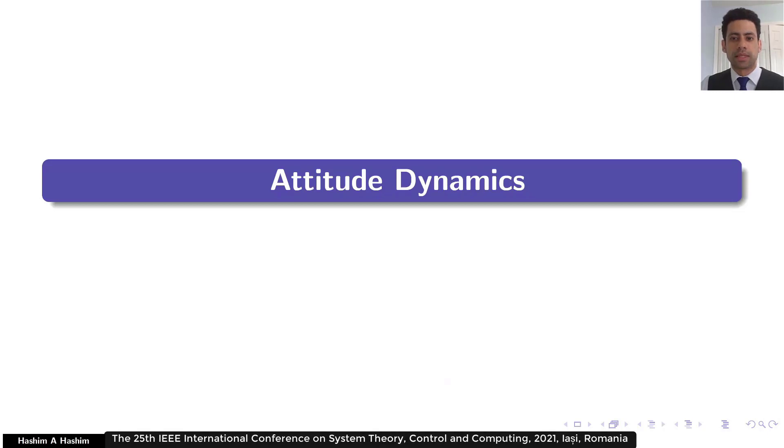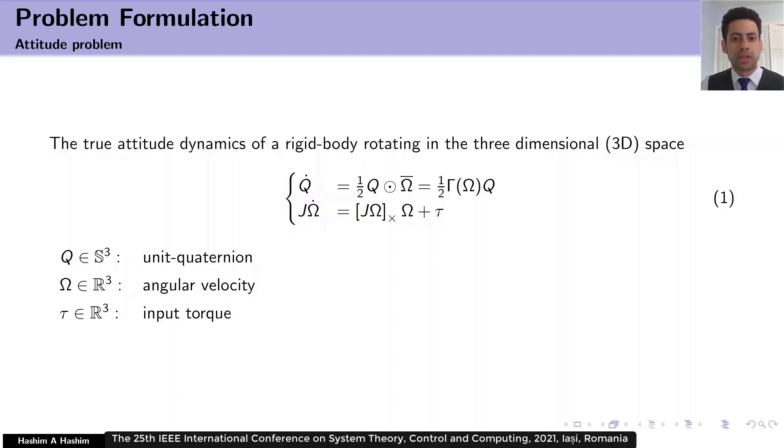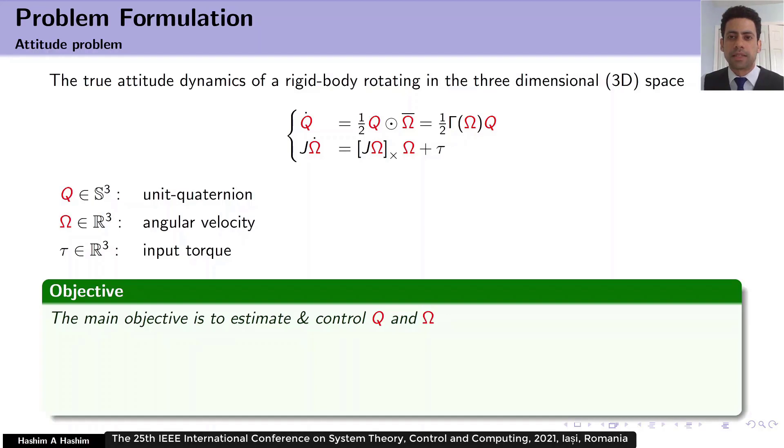Now let's move to attitude dynamics. The true attitude dynamics of a rigid body rotating in the three-dimensional space or 3D space can be represented by the following equation. Note that all the red components, namely rigid body's unit quaternion and angular velocity are unknown. As such, our main objective in this work is to estimate q and omega and then drive q hat to q and omega hat to omega.